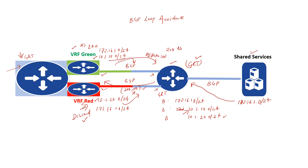So this router — which we were referring to as the shared services border router — is the key here, as it is responsible for the fusion of routes it is learning from shared services with routes learned from the border router. In SD Access terminology, we call this router the fusion router. The main function of this router is that it allows users in different SD Access virtual networks to reach shared services. Fusion router configuration is not automated by the DNA controller — manual configuration is required on this router.